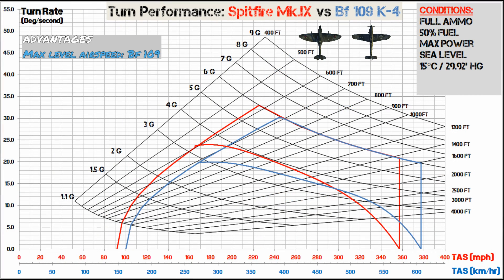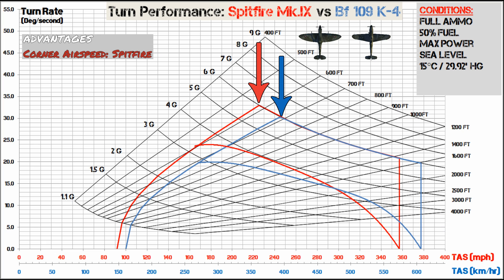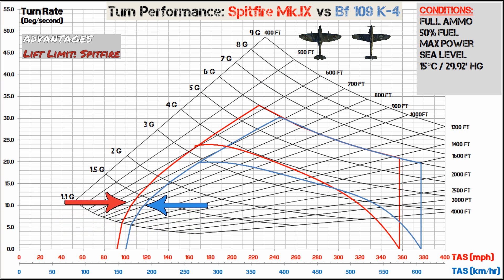Here's the combined EM diagram for the LF-Mk9 and the BF-109K4. The BF-109 has the advantage in top speed, meaning it's able to extend and get away from the Spitfire as long as it has enough initial separation. The 109 also has a higher corner airspeed than the Spitfire, but because both airplanes are limited to 6Gs, the Spitfire achieves a higher degrees-per-second turn rate and lower turn radius at corner speed. The Spitfire's lift limit is also higher than the 109, so low-speed maneuvering favors the Spitfire.